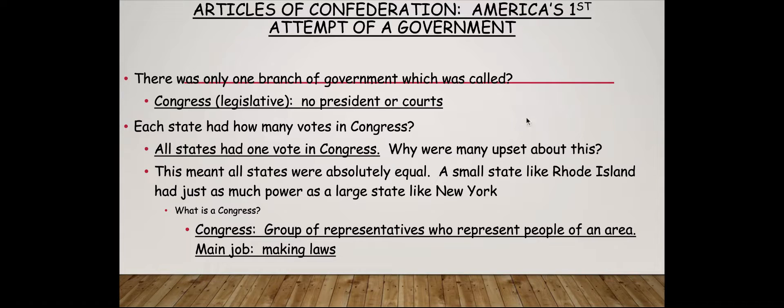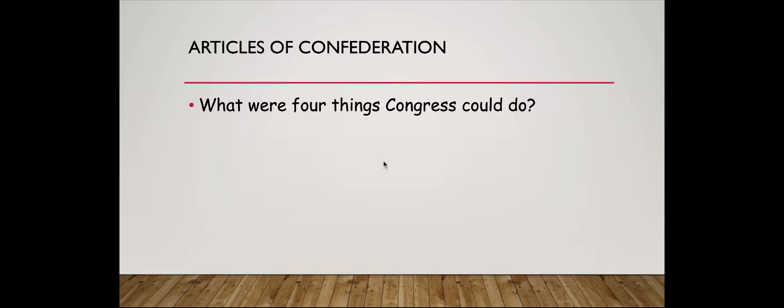So let's talk about what Congress could do. And you'll continue with your notes. So the four things Congress could do. They could deal with foreign nations and Indian tribes, so they could enter into treaties or alliances with different countries of the world or Native American tribes.